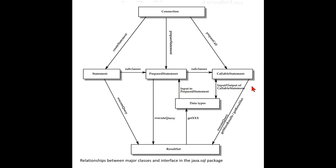The JDBC API provides a stored procedure SQL escape syntax that allows stored procedures to be called in a standard way for all RDBMSs. This escape syntax has one form that includes a result parameter and one that does not. If used, the result parameter must be registered as an out parameter. The other parameters can be used for input, output, or both. Parameters are referred to sequentially by number, with the first parameter being one.